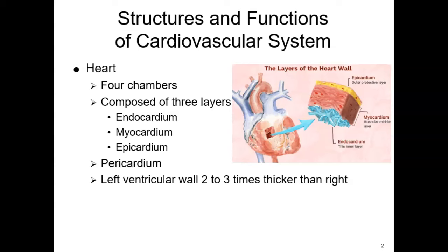The heart is also composed of three layers of tissues. We have the endocardium, which is the inner layer, the myocardium, which is the muscular layer in the center, and the epicardium, which is the outer protective layer of the heart. We also have the pericardium, which surrounds the heart, and the pericardial space in between, which is filled with pericardial fluid.